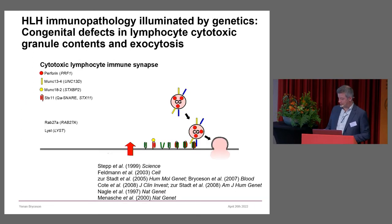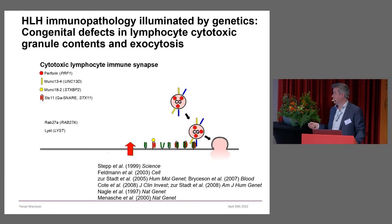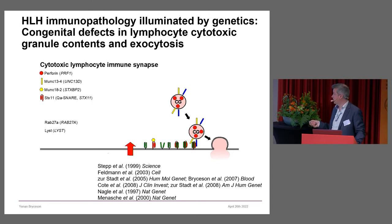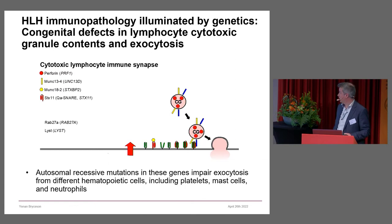We've been interested in how target cells are recognized and how they are killed. The field of HLH and clinicians have really uncovered a lot of genes required for lymphocyte cytotoxicity and associated with familial HLH. Geneviève de Saint-Basile in Paris is really one of the foremost pioneers in this field, first showing that perforin deficiency is associated with HLH, and then describing a set of other genes where loss-of-function mutations cause defective lymphocyte exocytosis.